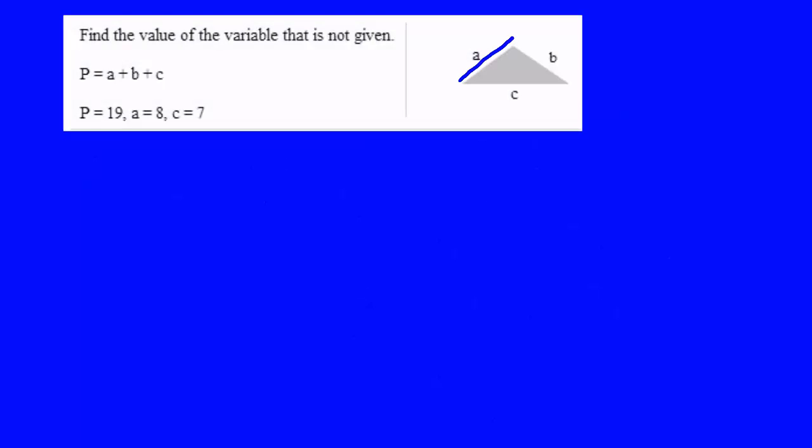Now we're going to find the perimeter. P usually means perimeter in a story problem. We're going to find the perimeter of a triangle.